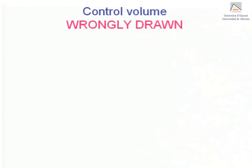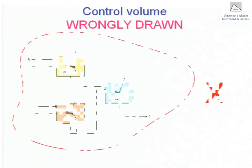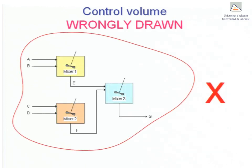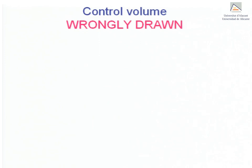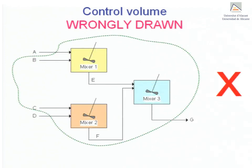If the line that defines the control volume does not cut any of the streams, it won't be possible to appreciate which streams enter or exit the process and therefore it would be wrongly drawn. It is important to remember that it would be incorrect to do the following. For whatever reason, the control volume has been drawn to avoid cutting streams B and C. This is a mistake that a few students make in exams.